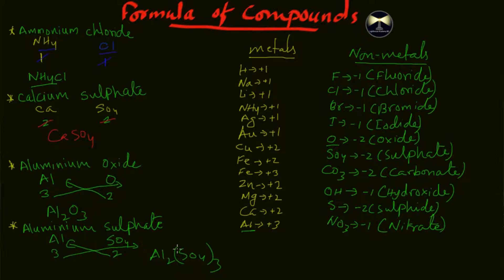After cross multiplication the formula becomes Al2(SO4)3 — the two comes to aluminium and the three comes to SO4. Now, notice why I chose these two compounds: with Al2O3 we did not put a bracket after oxygen, because oxygen was a single element joining with aluminium. But with aluminium sulfate, sulfur and oxygen combine together to join with aluminium, so you must include a bracket around SO4.